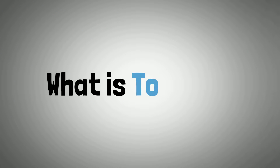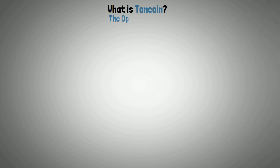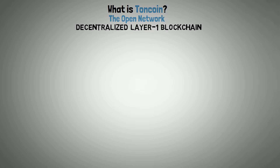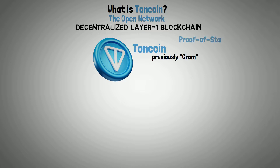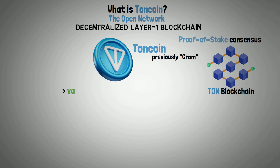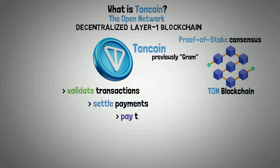Let's start with what is TAN Coin. The Open Network, a decentralized layer 1 blockchain, has its own native token called TAN Coin. Formerly known as GRAM, it uses the proof of stake consensus model on the TAN blockchain to validate transactions, settle payments, and pay transaction fees.